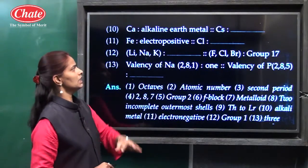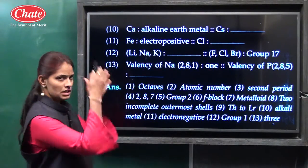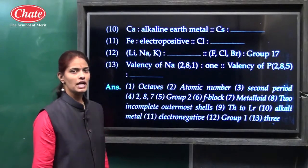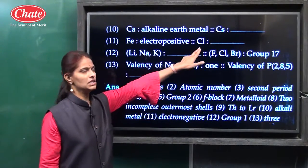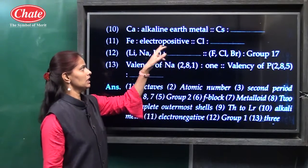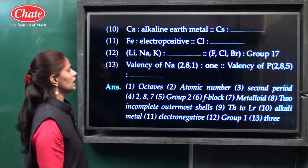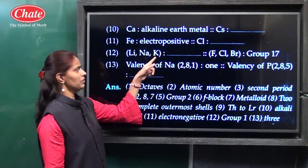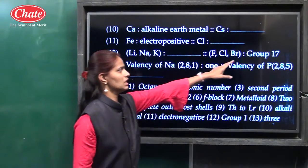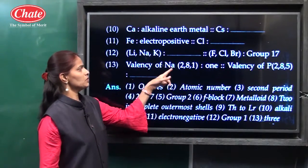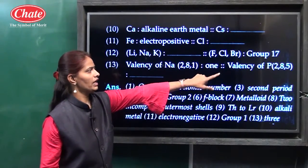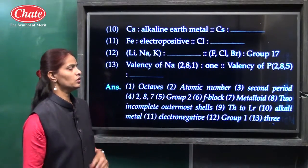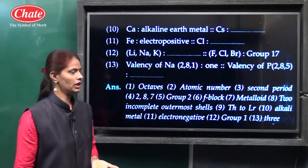Transition elements are present in the D block; inner transition elements are present in the F block. Tellurium is a metalloid; radium is a metal. Transition elements have two incomplete outermost shells; inner transition elements have three incomplete outermost shells. The answer for the lanthanide analogy is the actinide series. Ca is an alkaline earth metal and Cs is an alkali metal — Cs is present in the first group. Fe is electropositive and Cl is electronegative; Fe is a metal and Cl is a non-metal. Valency of sodium is 1 and valency of phosphorus is 3 because phosphorus gains 3 electrons to complete its octet.